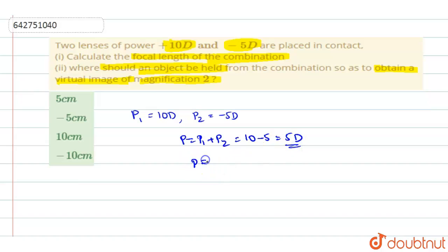So if that is the power, P will be equal to 1 by F, where F gives you the focal length of the combination. So it will be equal to 1 by 5 which will be equal to 0.2 meter. So the focal length of the combination is 0.2 meter or 20 centimeter.